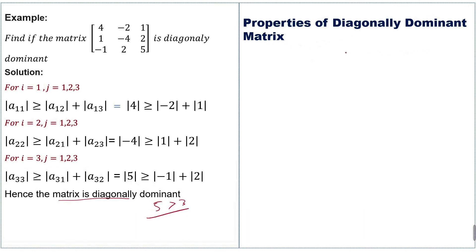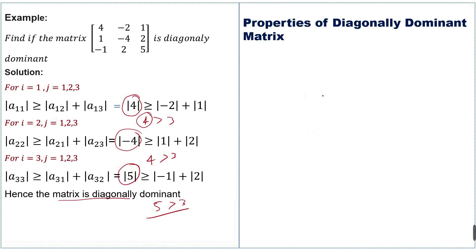Hence the matrix is strictly diagonally dominant, because all diagonal entries are strictly greater than the sum of non-diagonal entries in their respective rows: 4 > 3, 4 > 3, and 5 > 3. Since none are merely equal, the given matrix is strictly diagonally dominant.